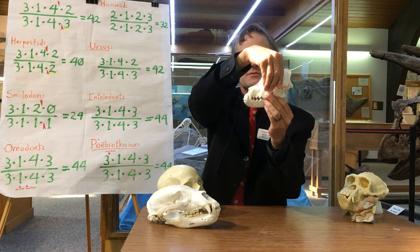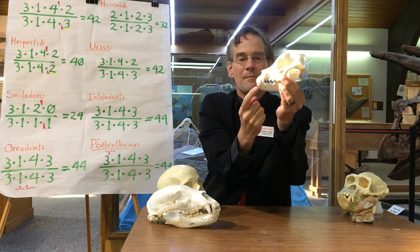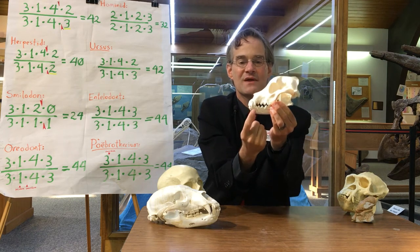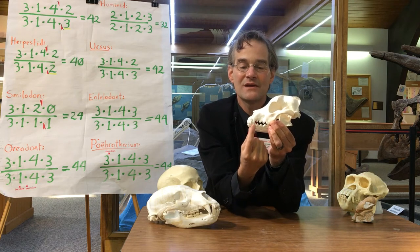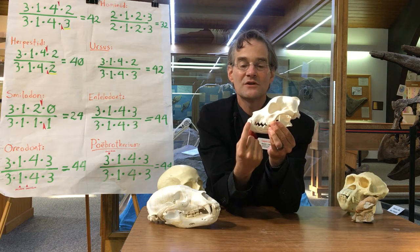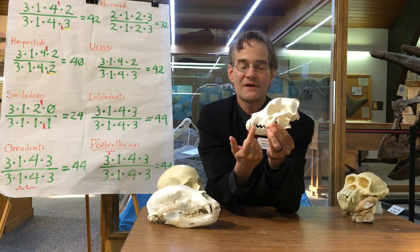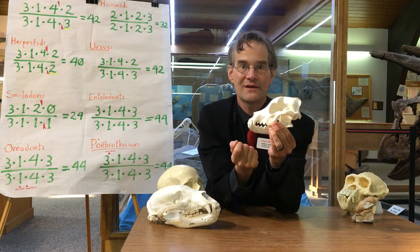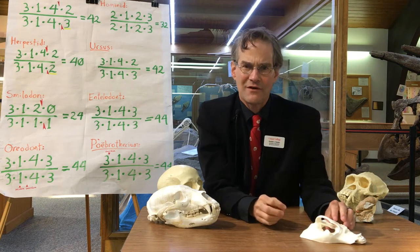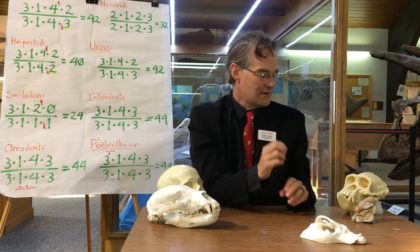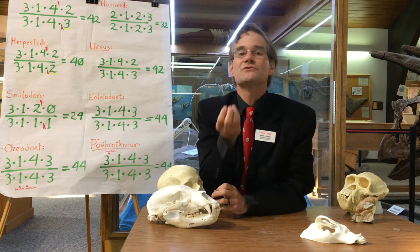Something else I'd like to point out, because this will become important later, is that when a mammal closes its mouth the upper canine is behind the lower canine, so that lower canine sticks up in front of the upper canine.